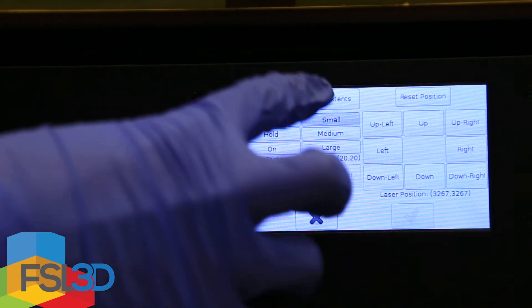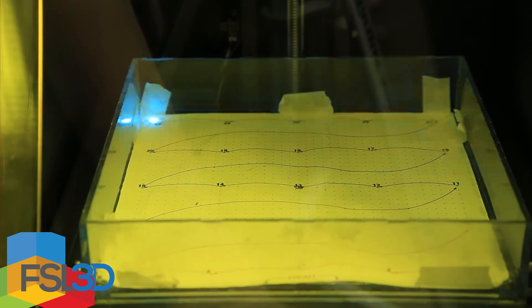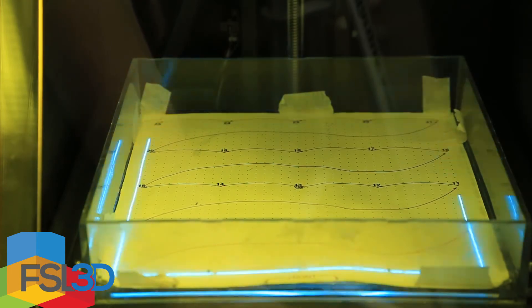Once the entirety of the path is within the vat, you can hold down the build extents button. It will run sharp lines around the perimeter, highlighting your build area.